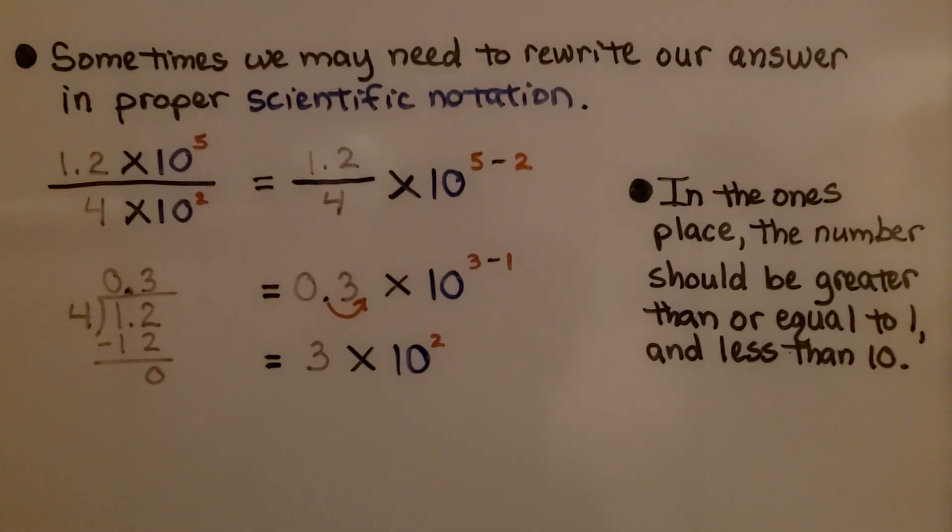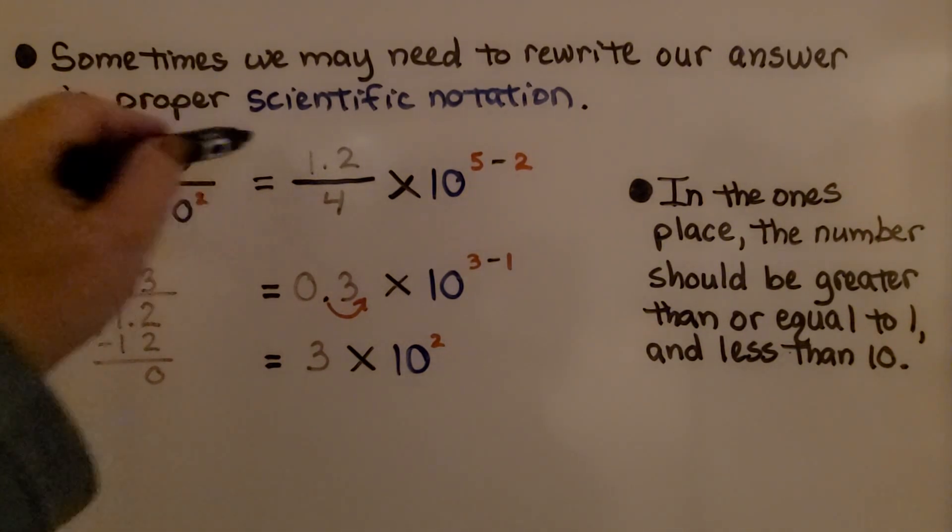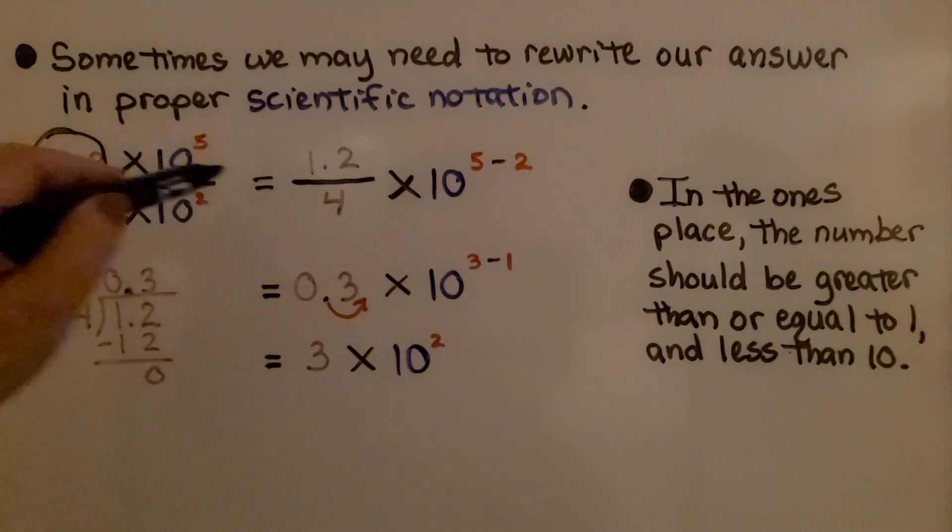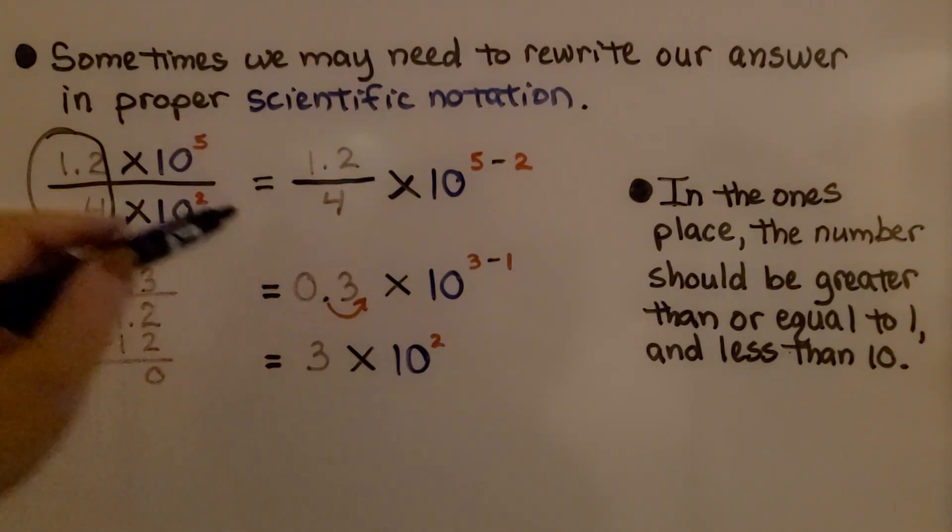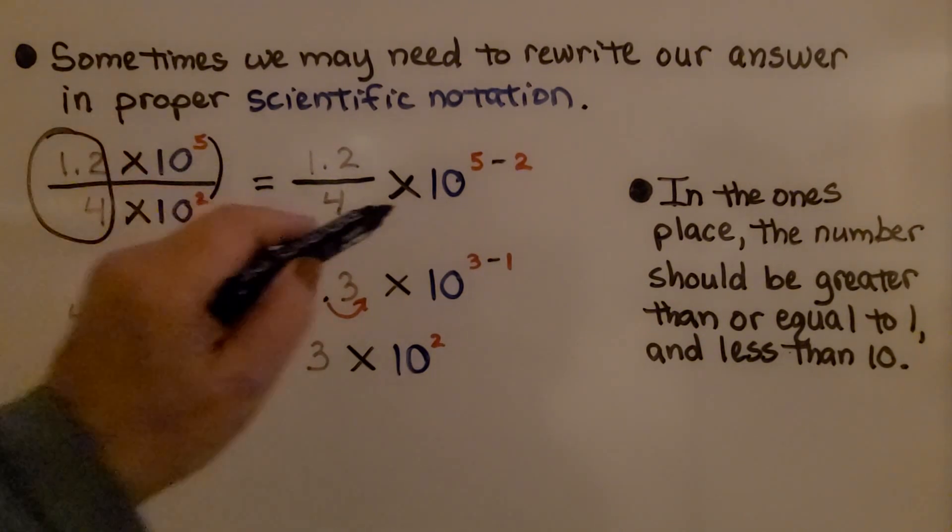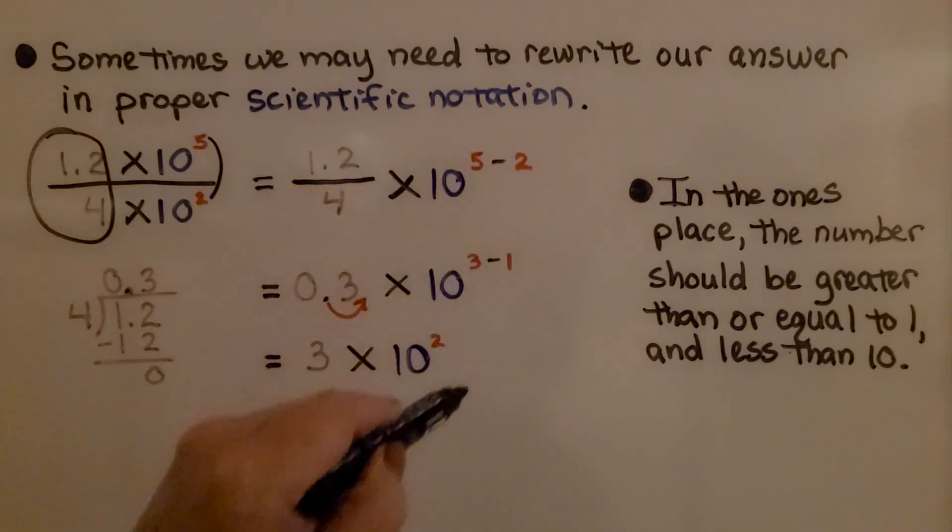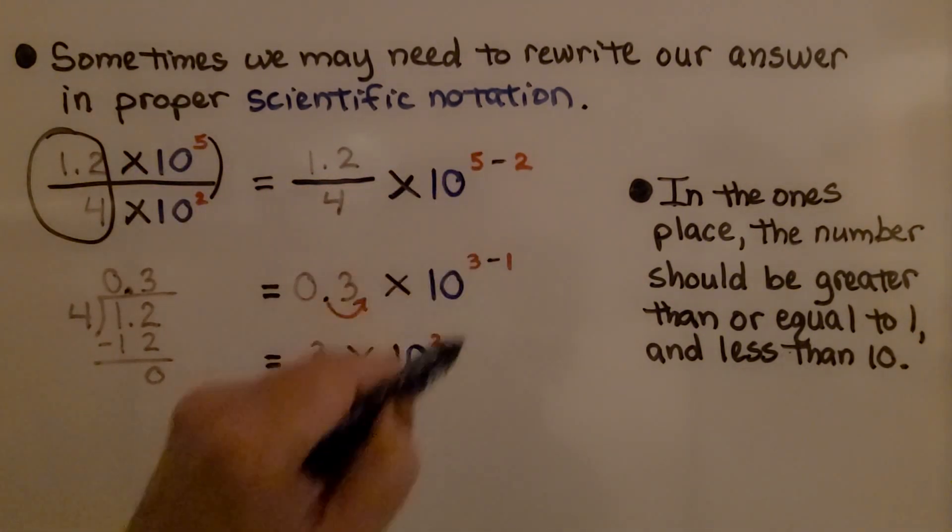Sometimes we may need to rewrite our answer in proper scientific notation. If we have 1.2 times 10 raised to the 5th power divided by 4 times 10 raised to the 2nd power, we do this division first. We have 1.2 divided by 4, which is going to give us 3 tenths. And we do this subtraction. So we have 10 raised to the 5 minus 2, which is going to give us a 3.